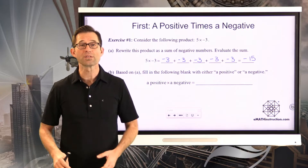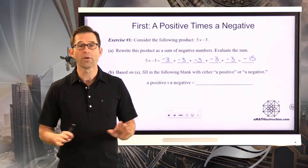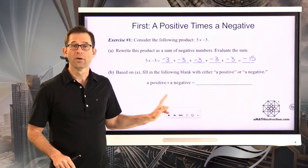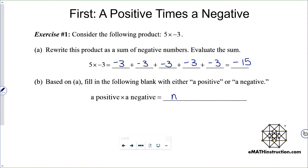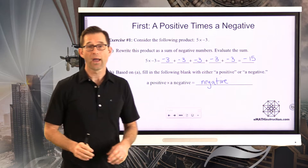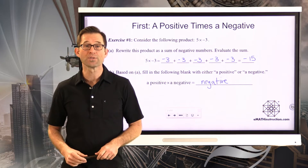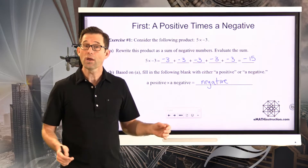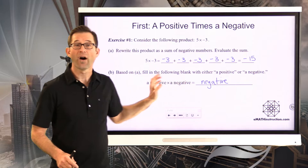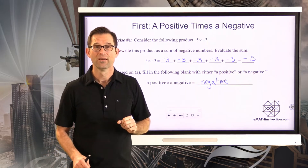Five negative 3s combined together gives me negative 15. This leads us to a fundamental fact: if I have a positive times a negative number, the result is going to be negative. All I'm doing is adding a bunch of negatives together a positive number of times. Notice that 5 times 3 is 15, and 5 times negative 3 gives exactly negative 15.